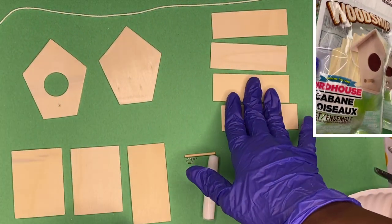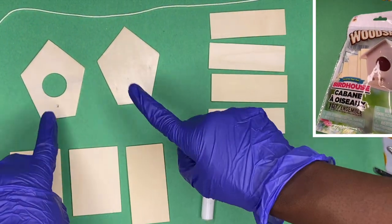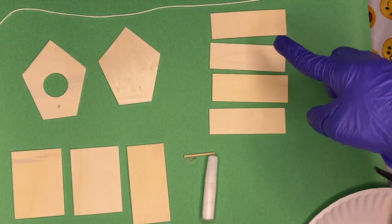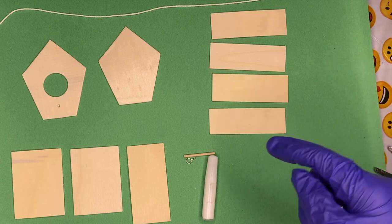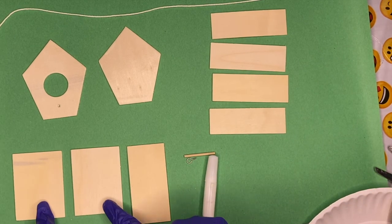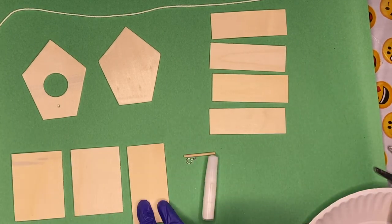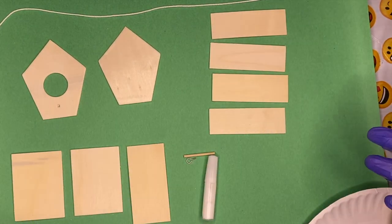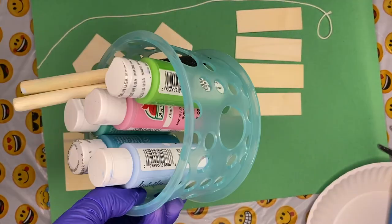So you guys, these are the pieces, everything that comes in the package. You got your front and back side of your birdhouse. You have the roof. Those are the four pieces there and then you have your sides and then you have the bottom and then we have some wood glue and we have a little peg for the birds to stand on like their little porch.